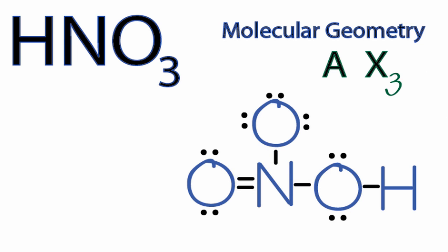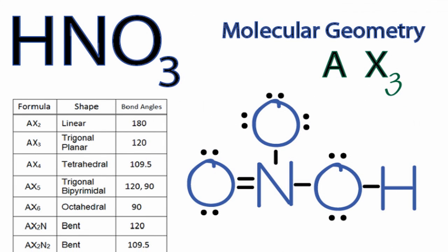You could have memorized that AX3 is trigonal planar. Or if you have a table available, you can look it up. So when we look at our table, we see AX2, and then right below it is AX3, which is trigonal planar with bond angles of 120 degrees.